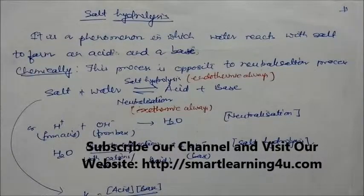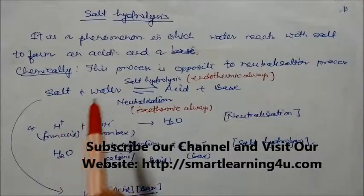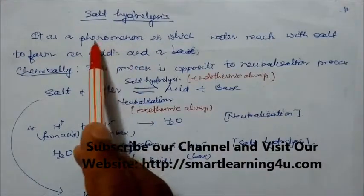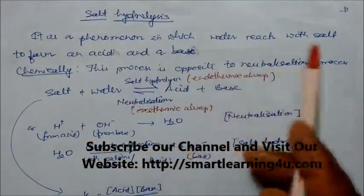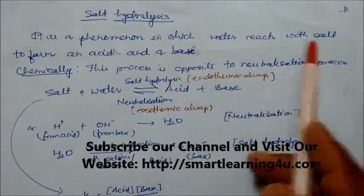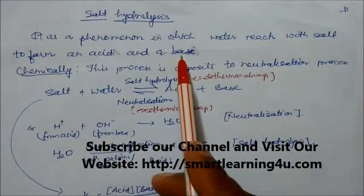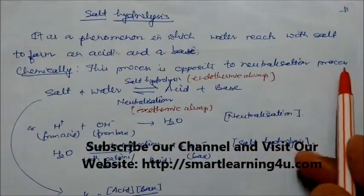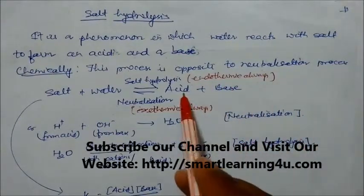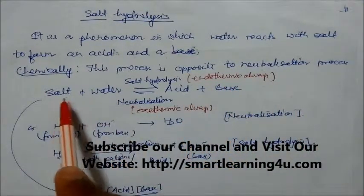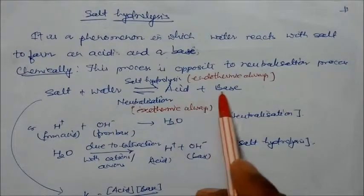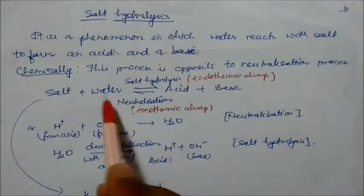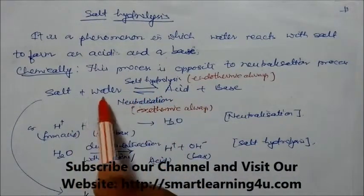In this session we will study one of the applications of salt called salt hydrolysis. Salt hydrolysis is a phenomenon in which water reacts with the salt to form an acid and a base. Chemically, this process is nothing but the opposite of the neutralization reaction — where acid plus base gives salt plus water, here salt plus water gives acid and base. This reverse process is called salt hydrolysis.